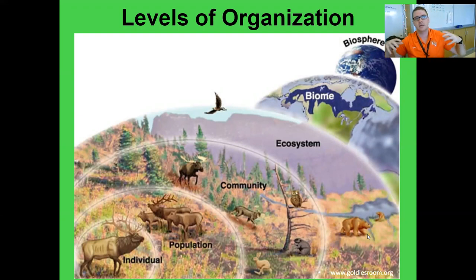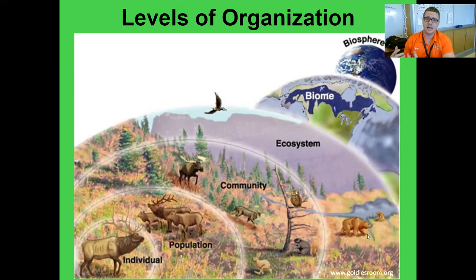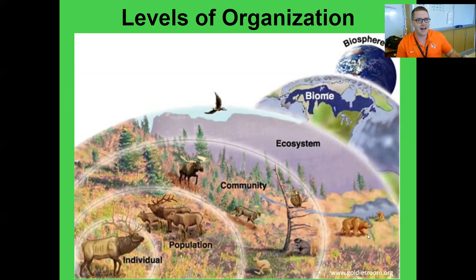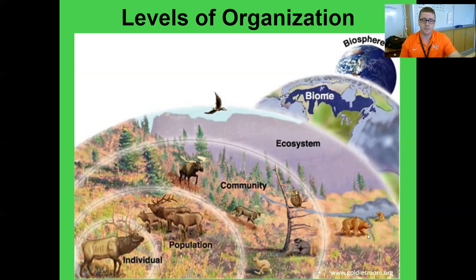Beyond that, we get to our biome stage. Think of this as a collection of different ecosystems strung together over a large geographic area, dictated by the type of climate that dominates that area and the type of primary vegetation or producers that inhabit it. Here in Pennsylvania, if you look outside, it looks glaringly different from the middle of Arizona. Both locations have different temperatures, precipitation patterns, and different types of plants — that's how we get these biome categories.